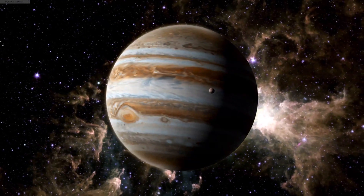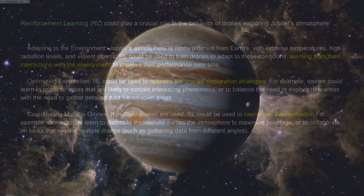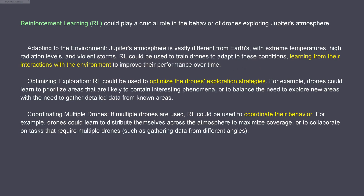Let's take another example: the stormy atmosphere of Jupiter. Here we are applying reinforcement learning for the behavior of drones that explore Jupiter's atmosphere. Those drones are learning from their interaction with their environment to improve their performance. We use reinforcement learning to optimize the drones' exploration strategies - they learn how to prioritize areas likely to contain interesting phenomena. With multiple drones, you can use reinforcement learning to coordinate behavior. We are almost in game theory territory - do some drones compete against other drones, or are they on a mixed strategy? There is a beautiful multitude of individual and swarm intelligence behaviors.